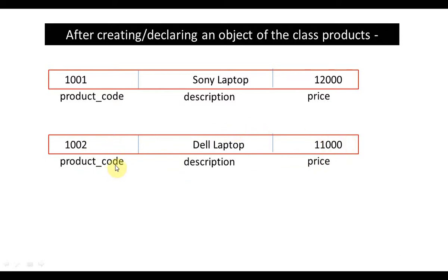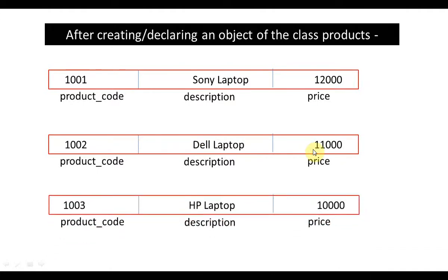It will be having the space for product_code, description, price. But of course, it will be having a different copy. Similarly, I will be having as many copies - suppose now if I have the third object, it will look like this.